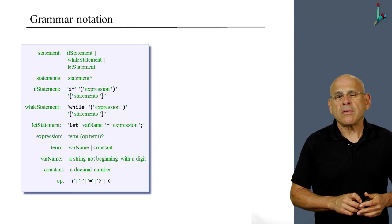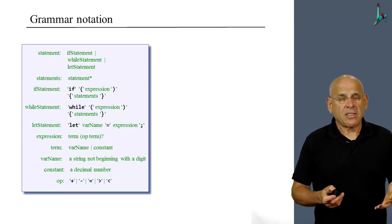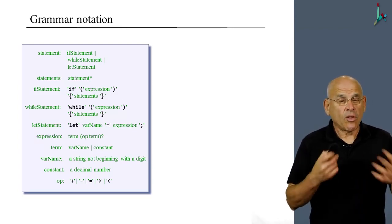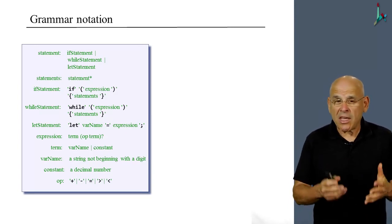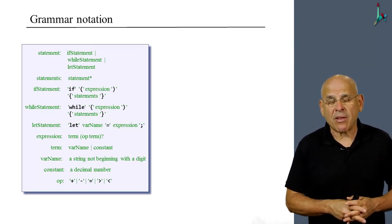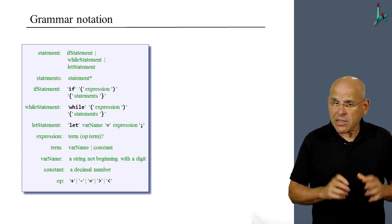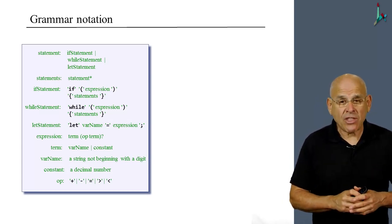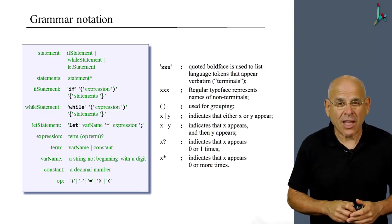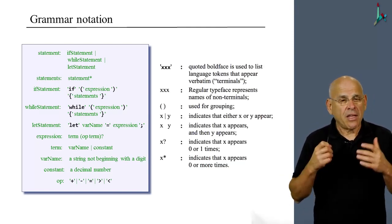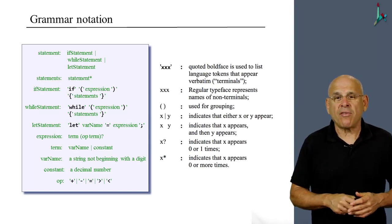All right, now as you noticed, we use a certain notation when we describe grammars. And what you see here is the subset of the Jack grammar that we used all along. I'd like to say a few words about the notation that we used all the time without paying much attention to it. So basically, here is a formal definition of the notation.